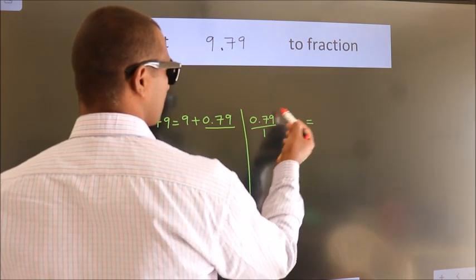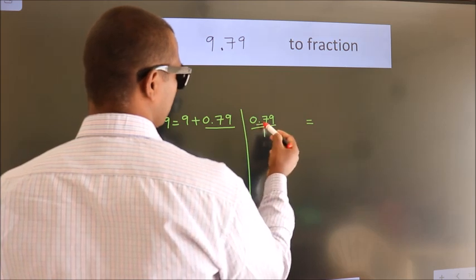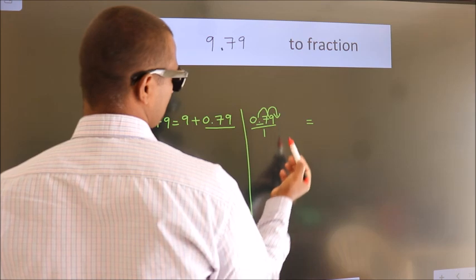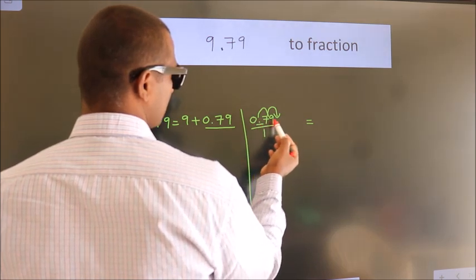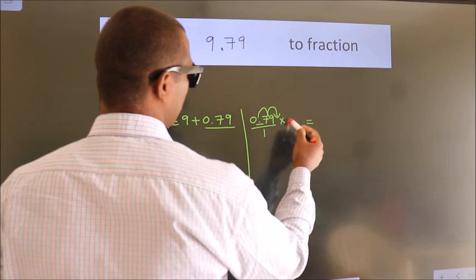To convert this to fraction, we have to move this decimal after 1, 2 numbers. To move this decimal after 2 numbers, multiply it with 100.